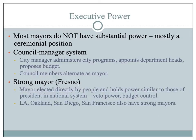Let's talk for a minute about executive power in cities. Most mayors do not have substantial power — mayor is mostly a ceremonial position where mayors represent the city at events, and council members alternate as mayor, as is the case in Clovis. On the other hand, Fresno has a strong mayor form of government. The mayor is elected directly by the people and holds power similar to those of the president in the national system. The mayor can veto legislation and has significant control over the budget process. Los Angeles, Oakland, San Diego, and San Francisco also have strong mayors.